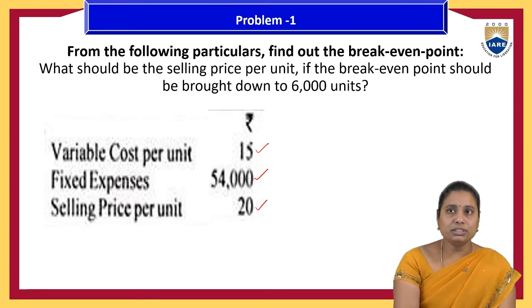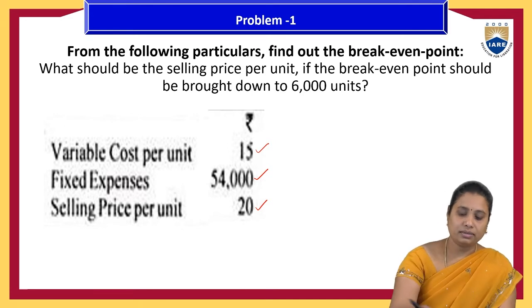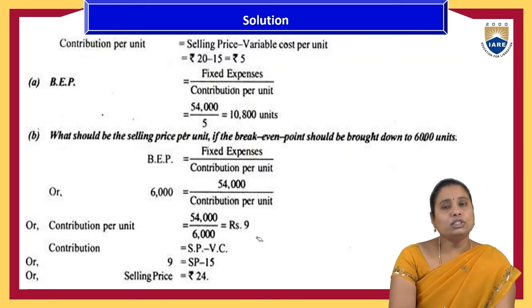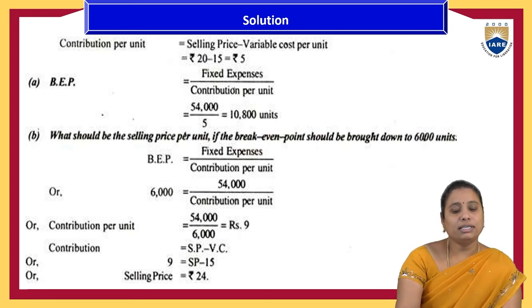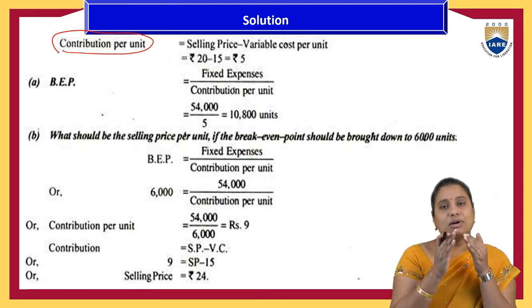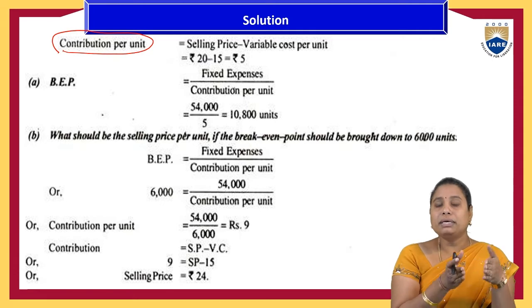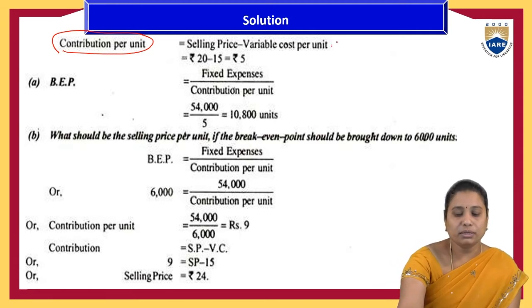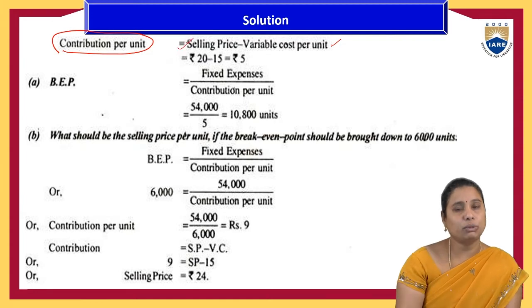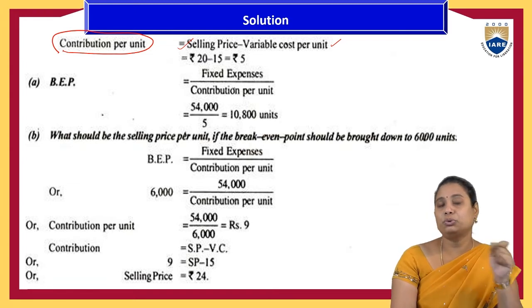From this data, first we need to find the break-even point, and then find the selling price if BEP is brought down to 6,000 units. The first step is to find the contribution per unit — for producing one product, the cost incurred on a per unit basis is called variable cost. Selling price per unit is ₹20.